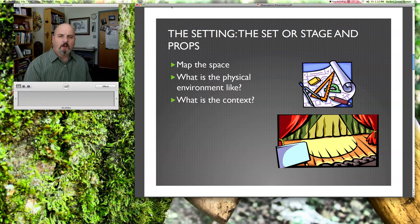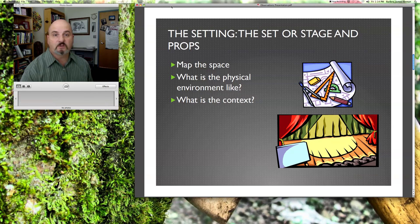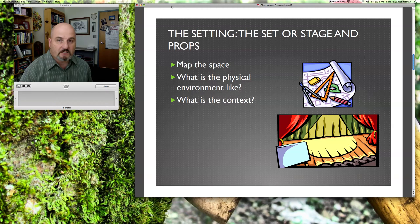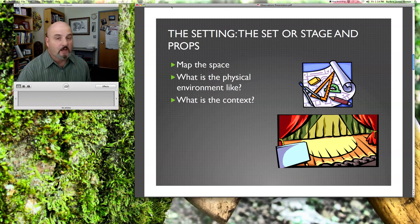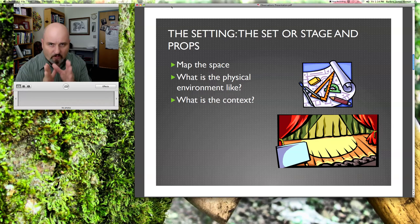Whenever you go in to do any kind of an observation for your research project — and be sure to review the syllabus for the assignment requirements — the first thing you're going to want to do is map the space. This gives you a different way to look at it when you look back after the observation is finished. What is the physical environment like? What is the context? You can write these things down in full sentence form, draw pictures, or use an outline with short phrases.